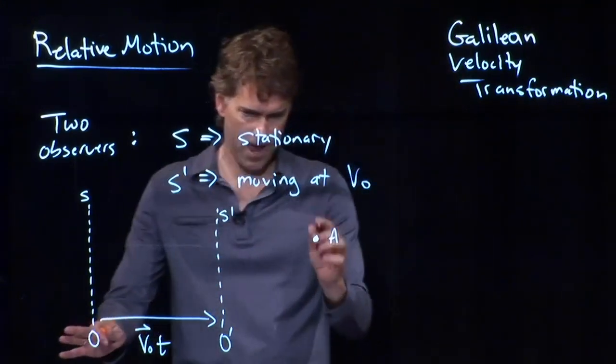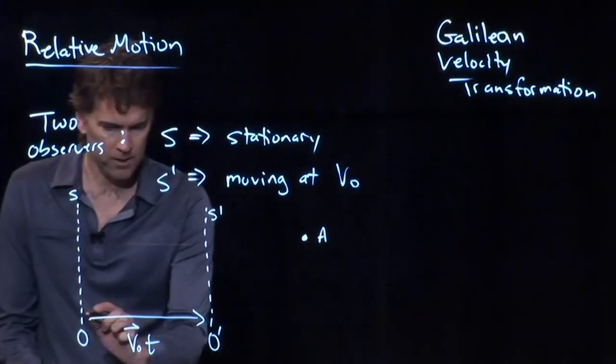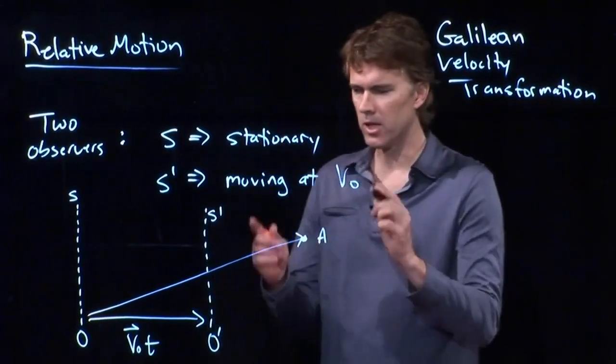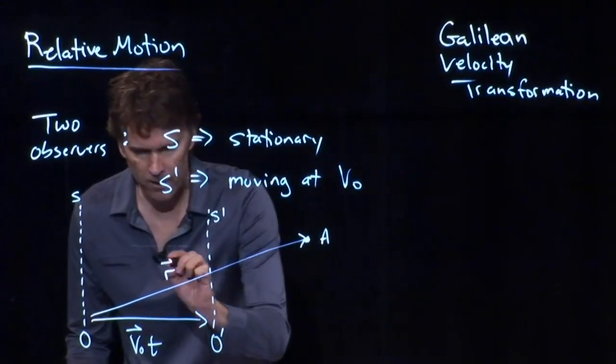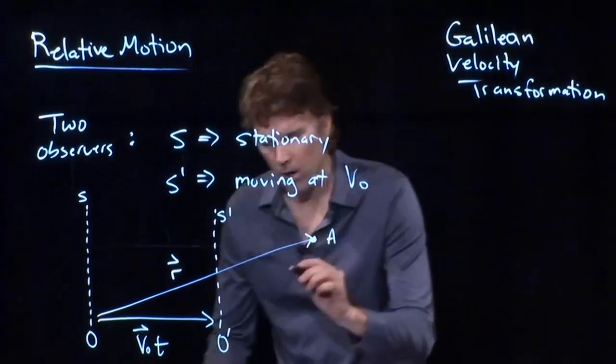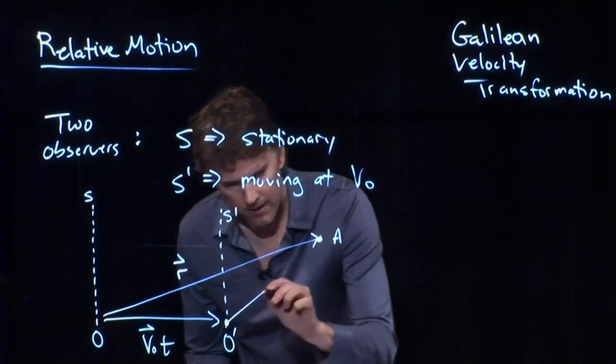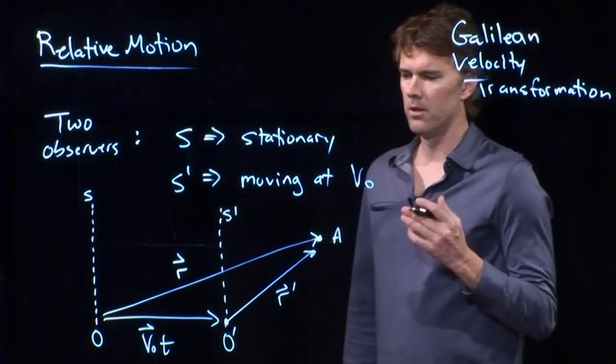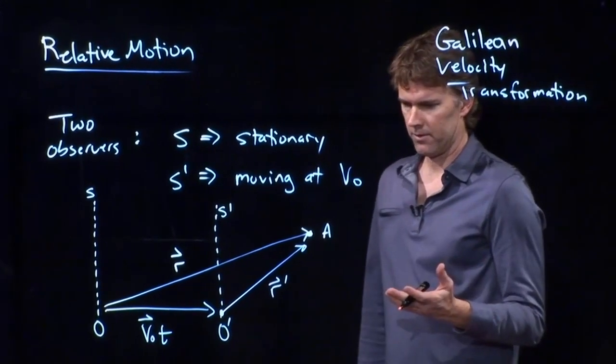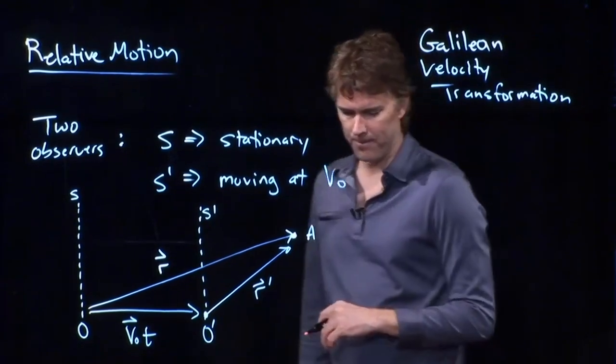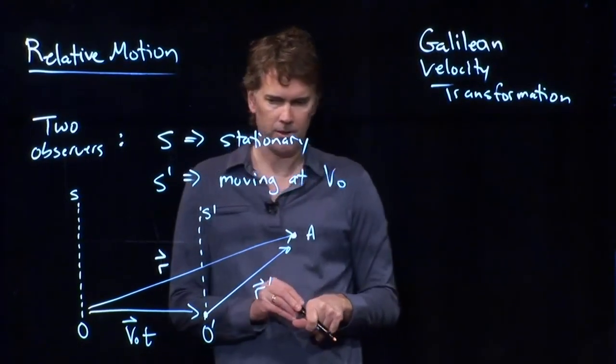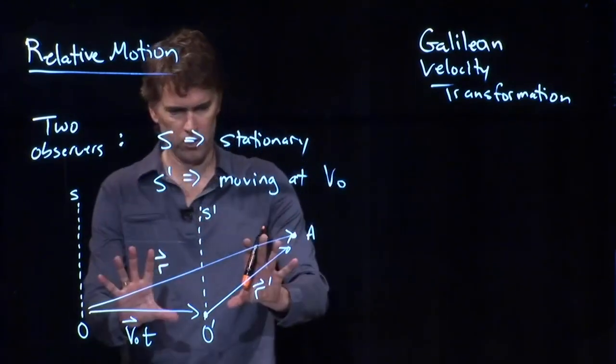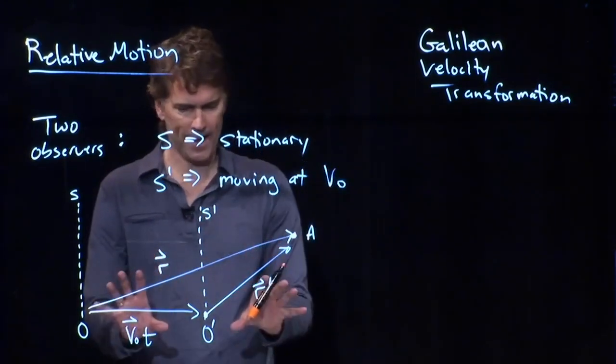O to A is what you observe. That is the position vector that you observe. And we can call that R. But O prime to A is what the moving observer observes. And that we can call R prime. All right. So this maybe looks a little complicated. But we are familiar with vectors, right? We know how to add up vectors.